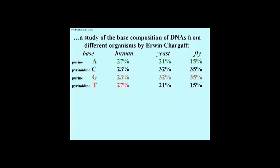Then they read about Erwin Chargaff's study of the base composition of DNAs from different organisms, shown in abbreviated fashion here. The bases ACGT are on the left, indicating which are purines and which are pyrimidines. The base composition of humans, yeast, and fruit fly is quite different.